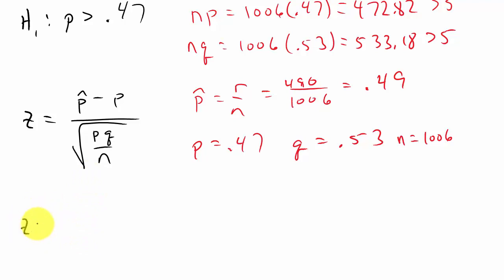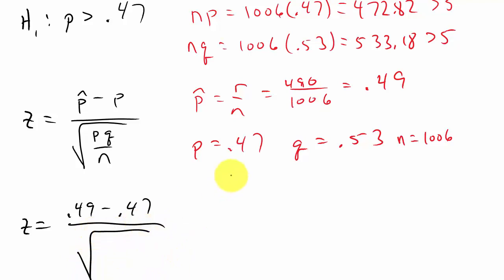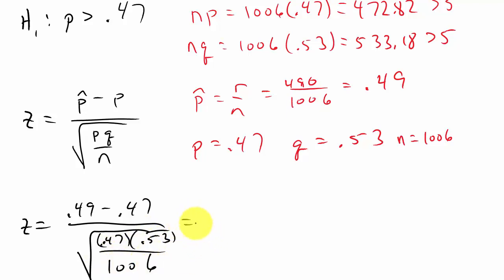Plugging in: Z equals 0.49 minus 0.47, over the square root of 0.47 times 0.53 over 1,006. That gives us Z equals 1.27, rounded to two decimal places.